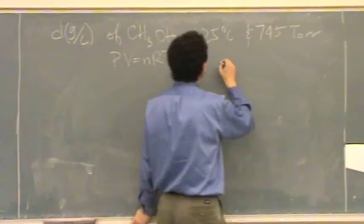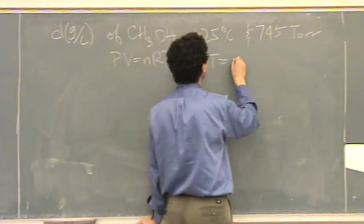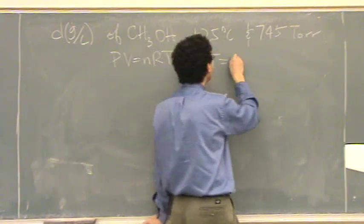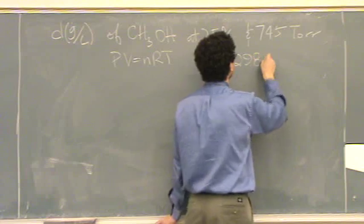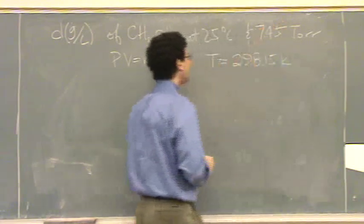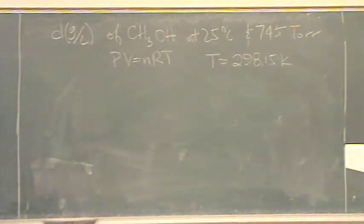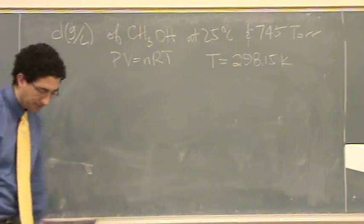So T, let's just get the factors. T, 25 degrees C, add 273.15 if you want to be really specific. There's temperature. I just add 273.15. You could add 273. That's fine with me.